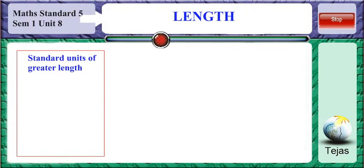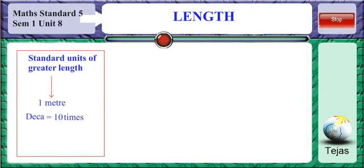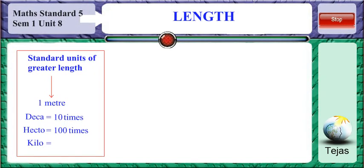The standard units for greater length are: decameter — deca is 10 times a meter; hectometer — hecto is 100 times a meter; and kilo is 1000 times a meter. So when we say the distance is 1 kilometer, that means it is equal to 1000 meters.